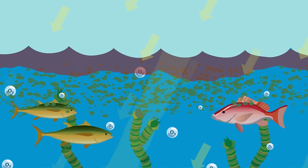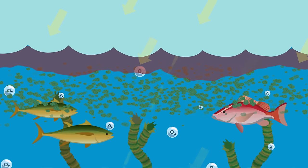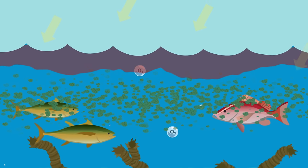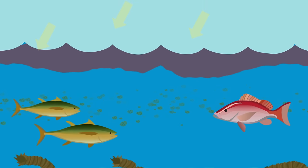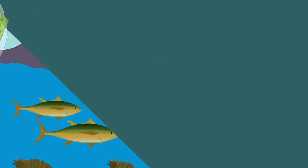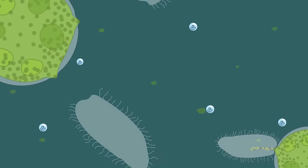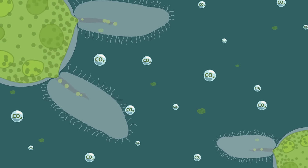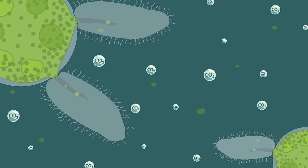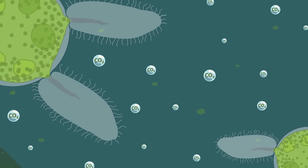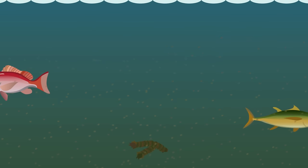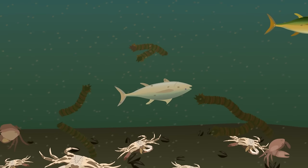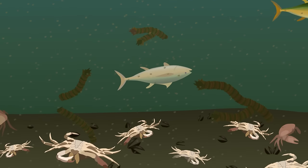Algae grows and blocks sunlight. Plants die without sunlight, and eventually the algae dies too. Bacteria digest the dead plants, using up remaining oxygen and giving off carbon dioxide. If they can't swim away, fish and other wildlife become unhealthy or die without oxygen.